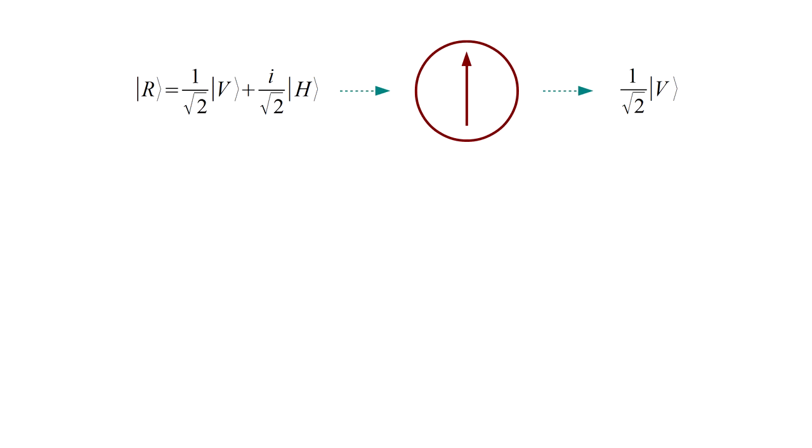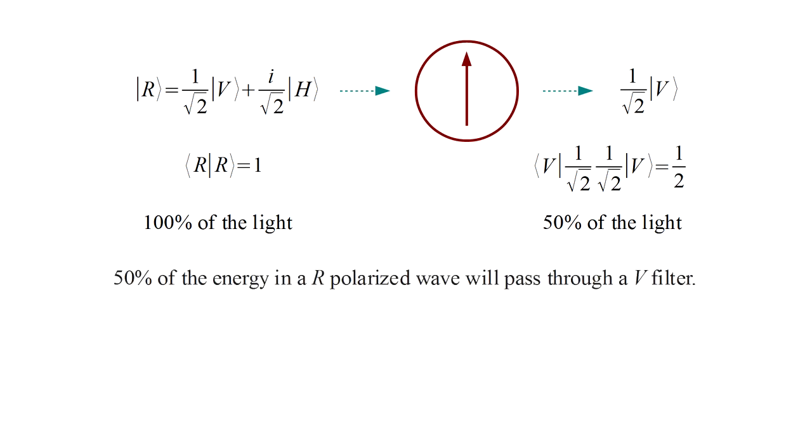Suppose the photon is r polarized. If it encounters a vertical filter, what comes out is one over square root two times the v state. Now the projection of the input state onto itself is one, which we can interpret as the intensity of the input state. The projection of the output state onto itself is only one half. We can interpret this classically as 100% of the light illuminated the filter, but only 50% made it through. 50% of the energy in an r polarized wave will pass through a v filter.